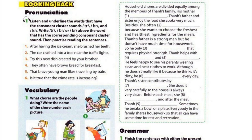Unit 1, Page 14 — Looking Back. Activity 1: Listen and underline the words that have the consonant cluster sounds tr, br, and cr. Write tr, br, or cr above the word that has the corresponding consonant cluster sound. Then, practice reading the sentences.